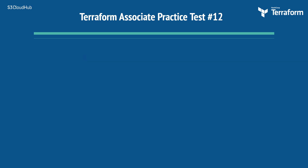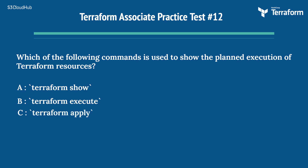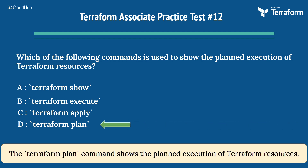The twelfth question is: which of the following commands is used to show the planned execution of Terraform resources? Option A: terraform show. Option B: terraform execute. Option C: terraform apply. Option D: terraform plan. The right answer is Option D: terraform plan. The terraform plan command shows the planned execution of Terraform resources.